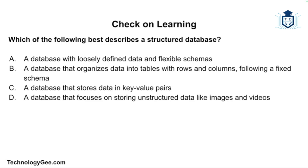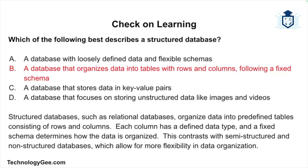Check on learning: Which of the following best describes a structured database? Is it a database with loosely defined data in flexible schemas? A database that organizes data into tables with rows and columns following a fixed schema? A database that stores data in key-value pairs? Or a database that focuses on storing unstructured data like images and videos? The correct answer is: a database that organizes data into tables with rows and columns following a fixed schema. Structured databases organize data into predefined tables of rows and columns; each column has a defined data type and a fixed schema determines how the data is organized, contrasting with semi-structured and non-structured databases which allow more flexibility.